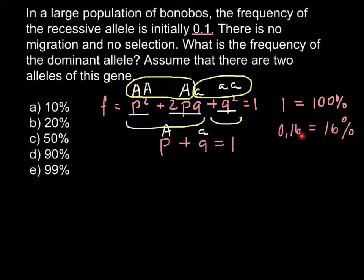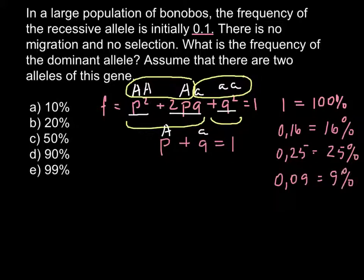And this is how we would get 16. For example, consider 0.25, and this would equal 25%, or 0.09 would equal 9%. We have to move, as I said, this decimal point two places to the right.